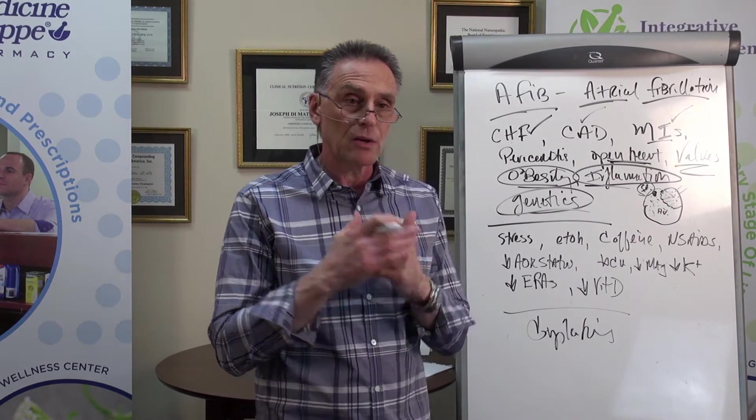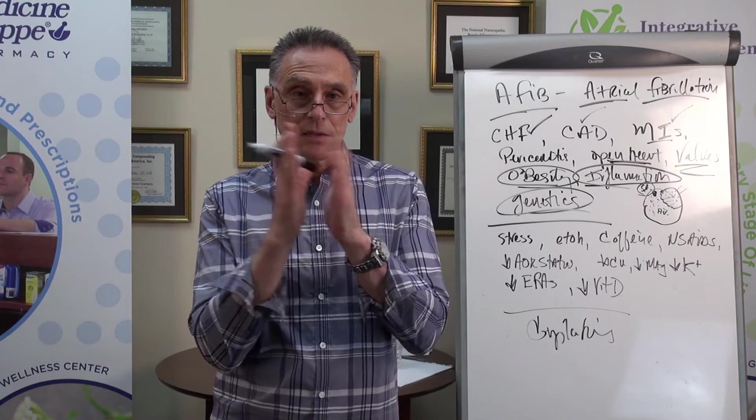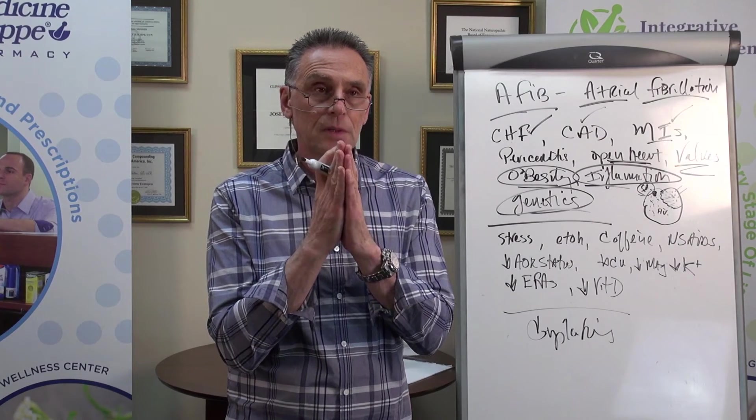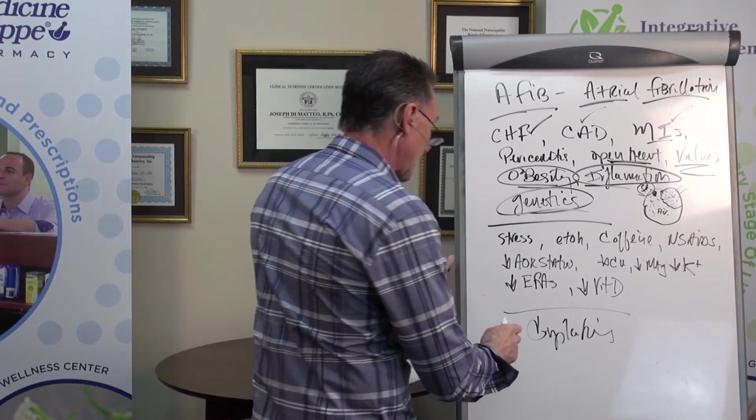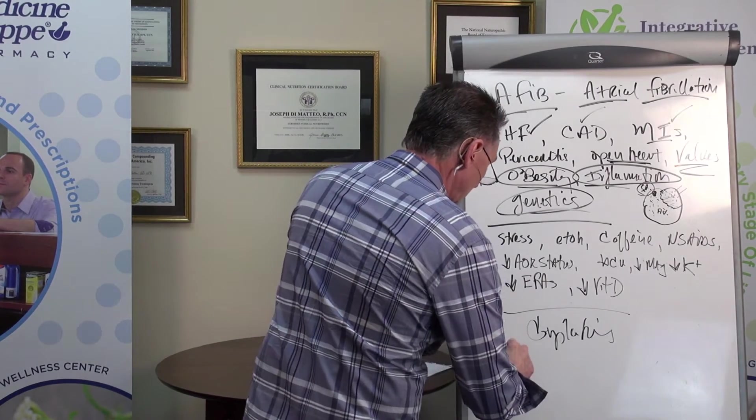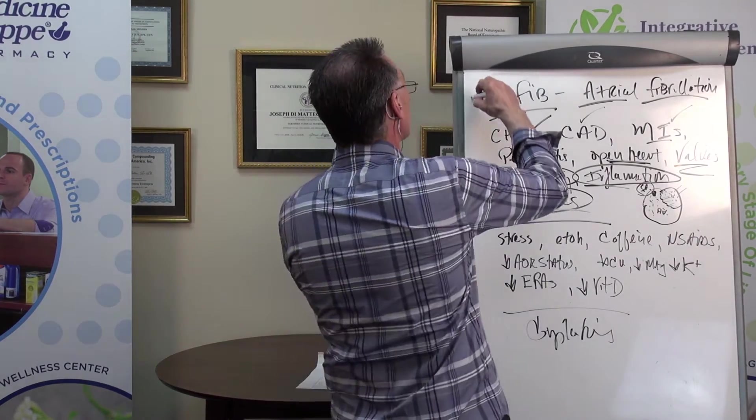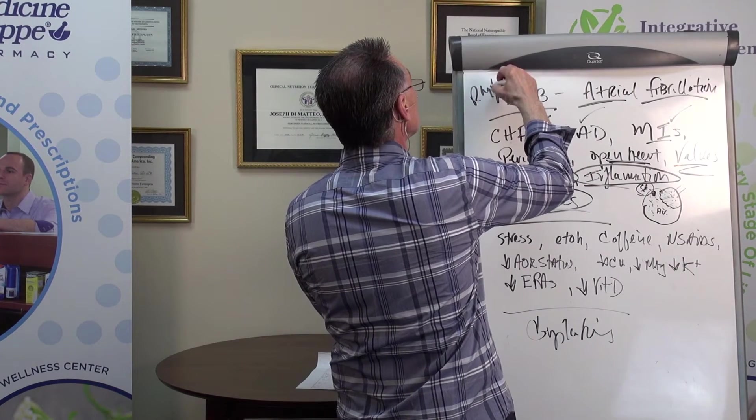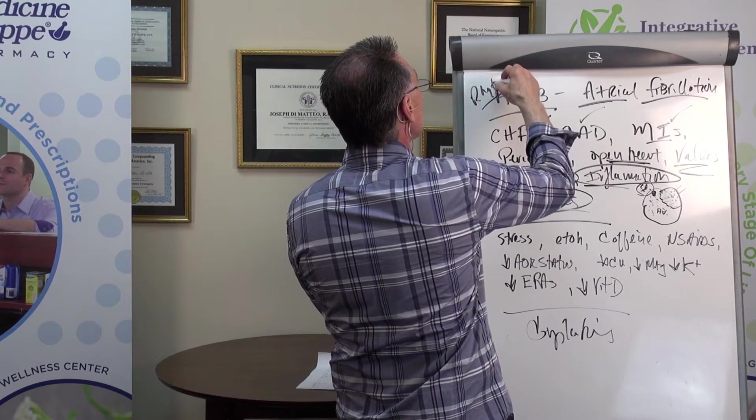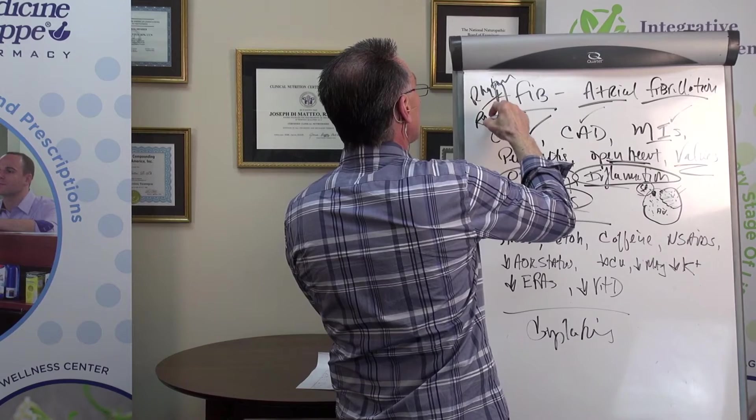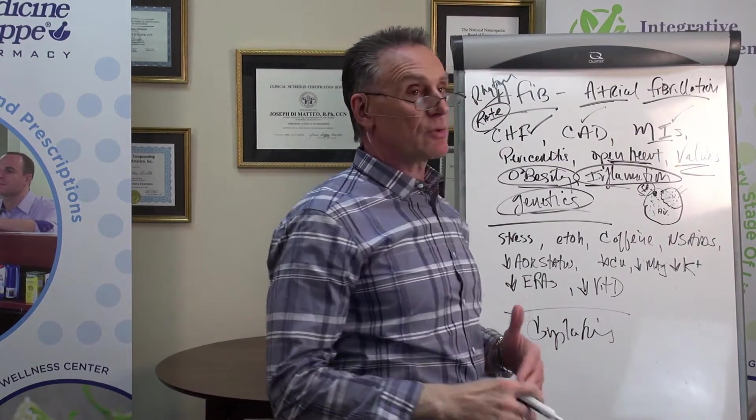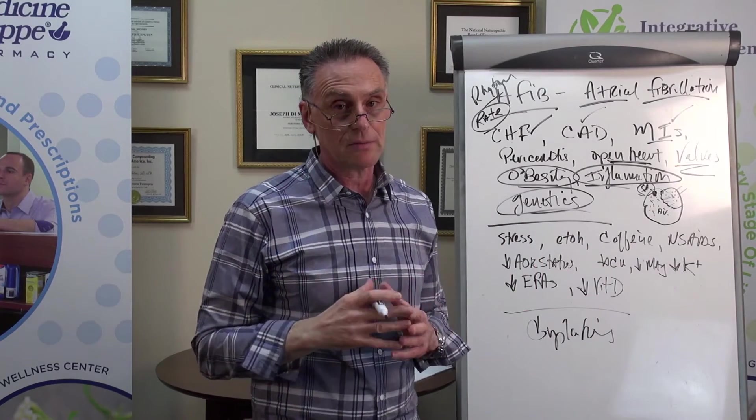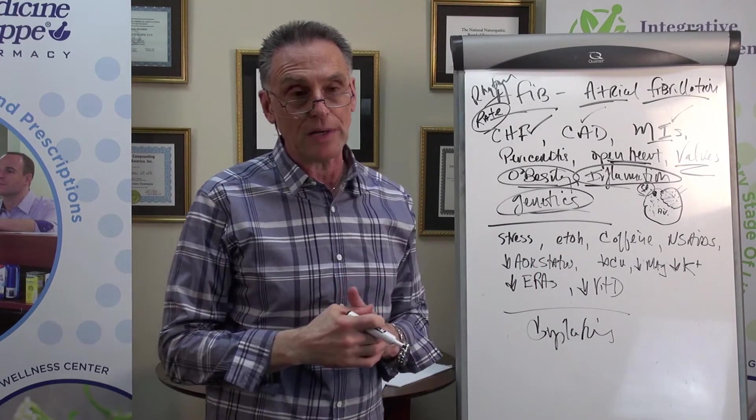There's a tremendous level of dysfunction that occurs. Some folks are very asymptomatic. Others, their lives are completely disrupted under attacks and bouts. Some, the heart not only goes into an irregular beat, that fibrillation, but it also, the rate goes up. So you could have a rhythm issue. Atrial fib is more of a rhythm. But you could also have a rate issue.